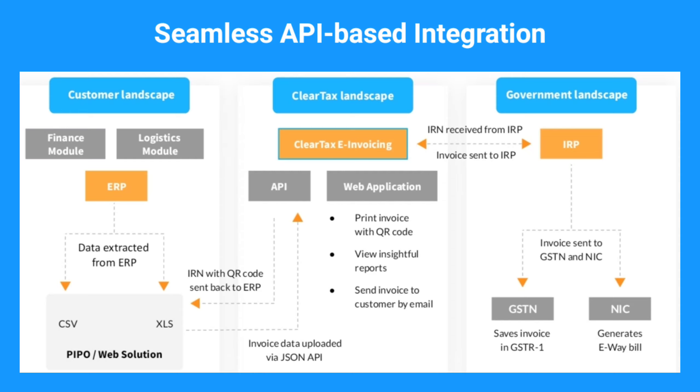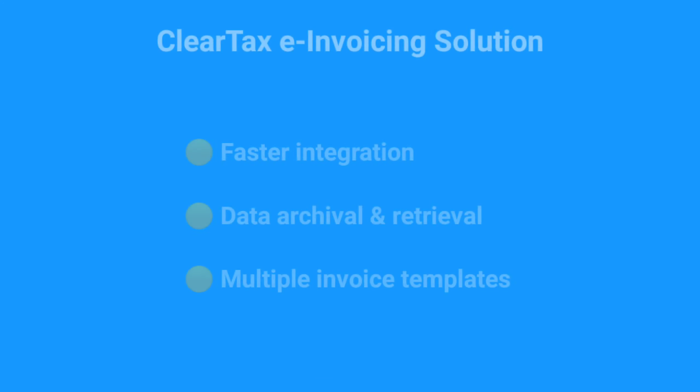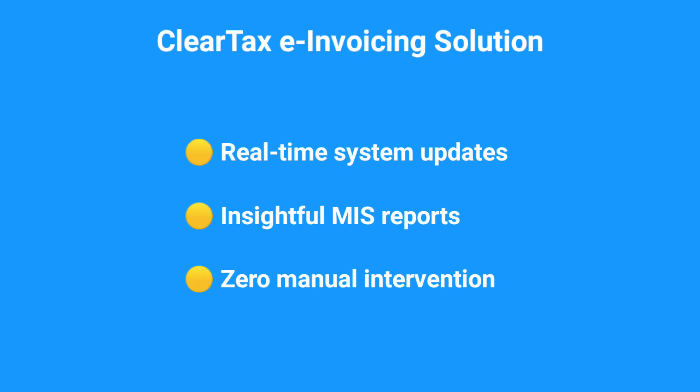The process involves data extraction from the ERP system using a web solution via JSON API through ASP-GSP. The IRP immediately receives the invoice data and generates the IRN. Using APIs, the ASP or GSP sends the IRN and QR code back to the ERP system. The ClearTax advantage here is that it allows faster API integration completed in under four weeks, and also archival of e-invoices and IRN data for up to eight years. Furthermore, multiple invoice templates are provided and the software is kept up to date with the latest invoicing rules. It gives access to insightful reports and ensures zero manual intervention.